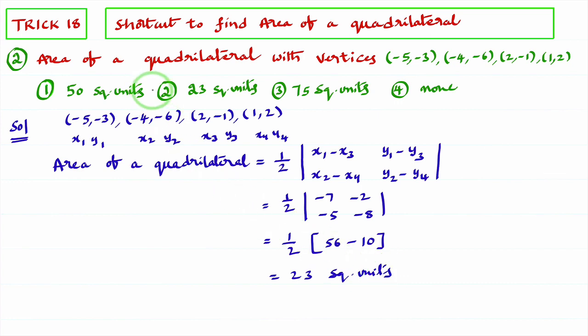So which option is the right option? Second option is the right option. This is very easy trick to calculate area of quadrilateral. Only thing is you need to practice this formula little bit. That's it. I hope you understand this trick.